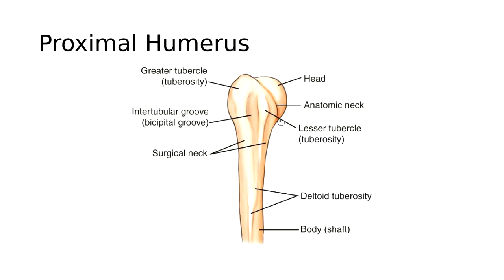On the proximal humerus, you have the humeral head. The humerus actually has two necks: an anatomic neck superiorly and a surgical neck below. It has a greater tubercle which sticks out in the external view of the shoulder, and a lesser tubercle which sits more anteriorly. In between the two tubercles is the intertubercular groove, or bicipital groove. The deltoid tuberosity is where the deltoid muscle attaches, along the body or shaft of the humerus.